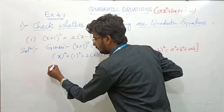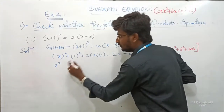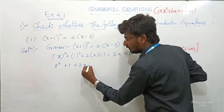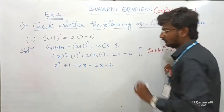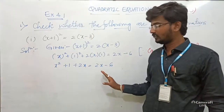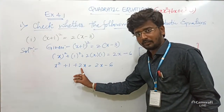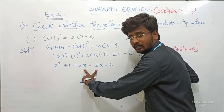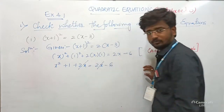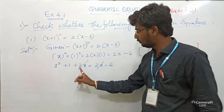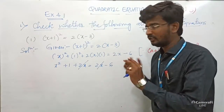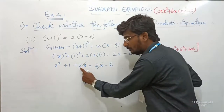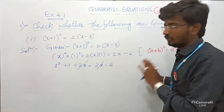Now, X² + 2X + 1 = 2X − 6. Comparing LHS and RHS: both sides have +2X. Since the sign and variable are the same on both sides, we can cancel these two terms. If not, you can take both terms to the LHS and 2X − 2X becomes 0.